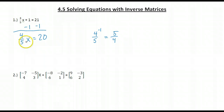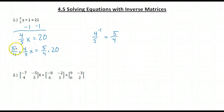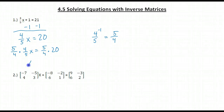So to get rid of 4 fifths times x, I'm going to multiply both sides of my equation by the inverse. Now when I multiply by the inverse, I end up with 1. Any number times its inverse is the identity 1. And 1 times x is going to be x. So this 5 fourths times 4 fifths doesn't disappear — it really turns into 1, which turns into 1 times x, which turns into just x.